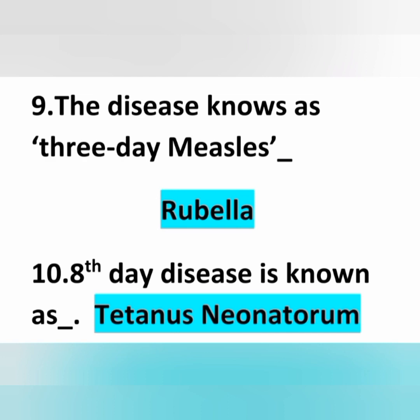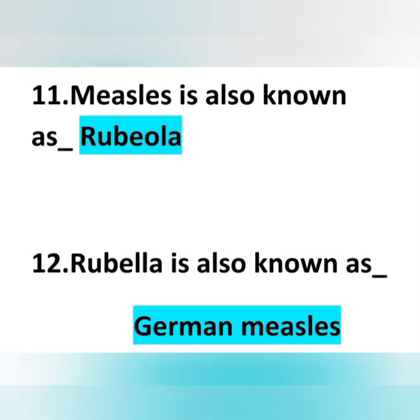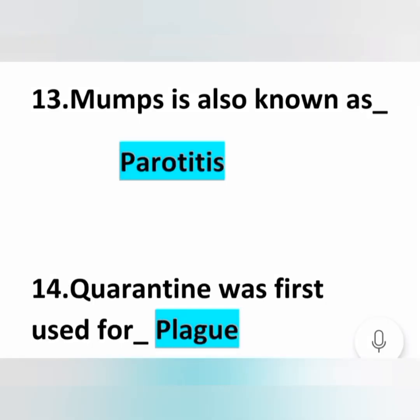All are important points — before going to the exam, read these once. Measles is also known as rubeola. Mumps is also known as parotiditis. Quarantine was first used for plague.